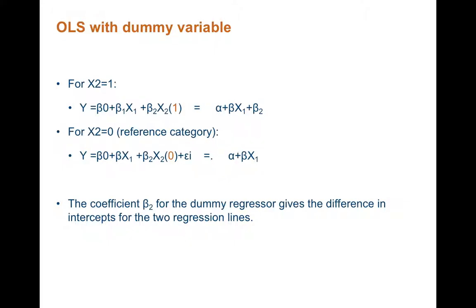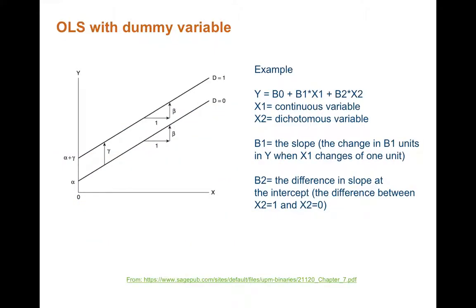In graphical terms, we can understand the value of beta 2 for X2 as the difference at the intercept between X2 equal 1 and X2 equal 0. Put in another way, beta 2 gives information about the value of Y when X2 is 1 or 0.